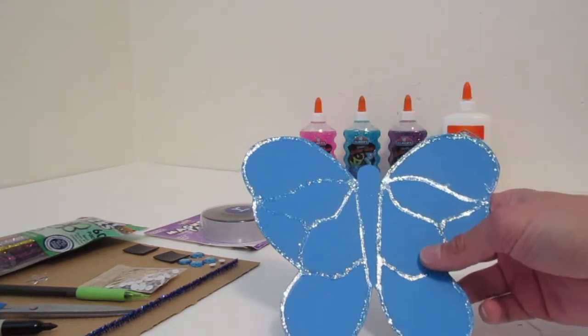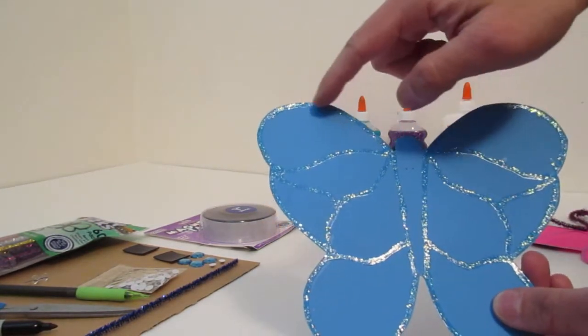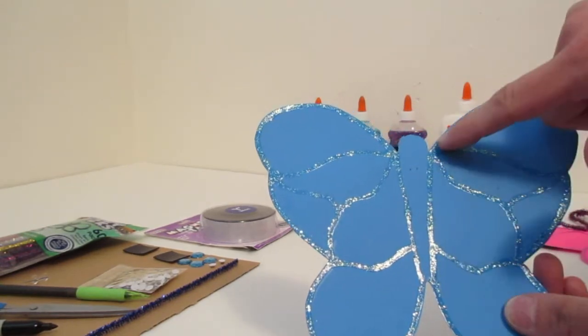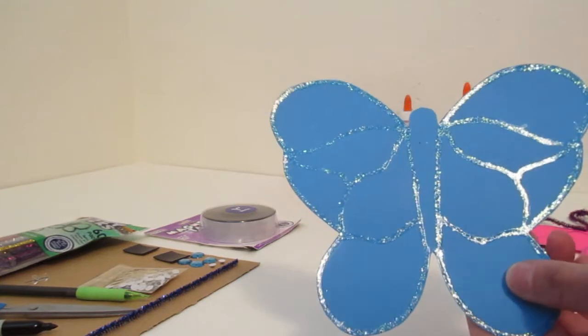Once you cut out the colored butterfly, the next step is to take glitter glue and you go around the edges and trace it and make a straight line where the body goes. Then after that you do whatever design you like for its wings.